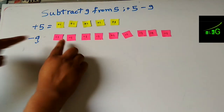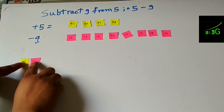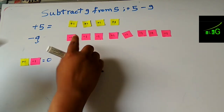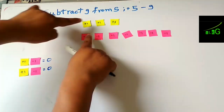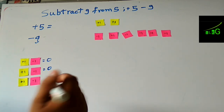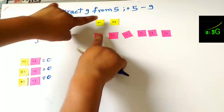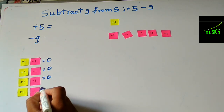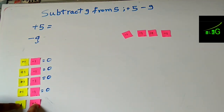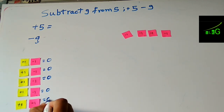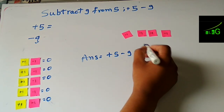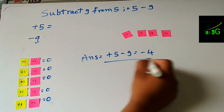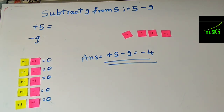Now pair them up: plus one and minus one is zero, then plus one minus one is zero again, and plus one minus one is zero once more. You can see the answer: plus five minus nine leaves four strips of minus one remaining, so the answer is minus four.